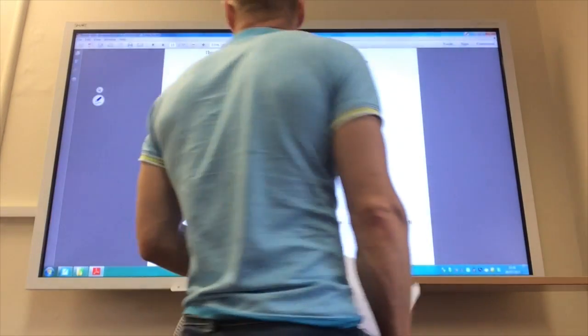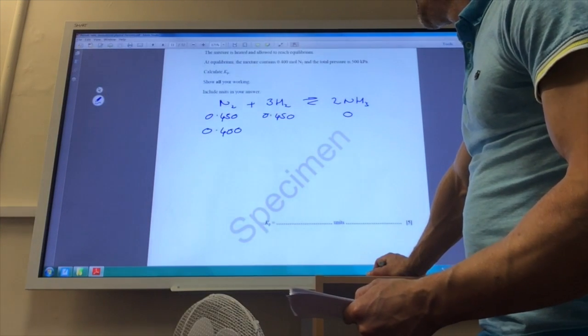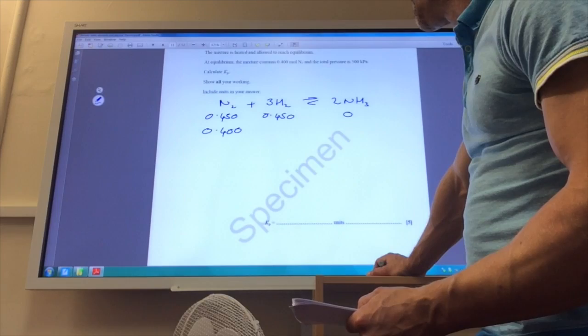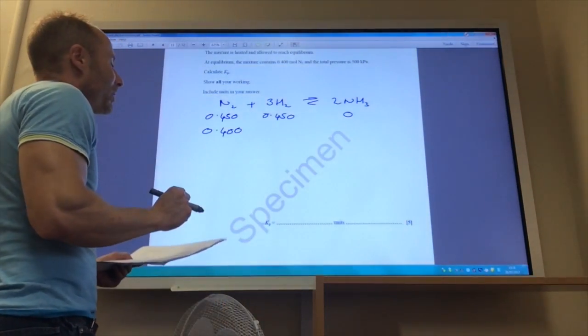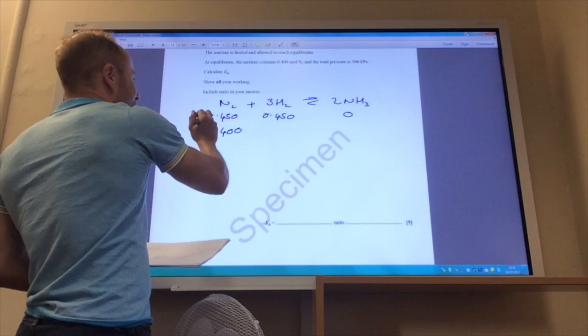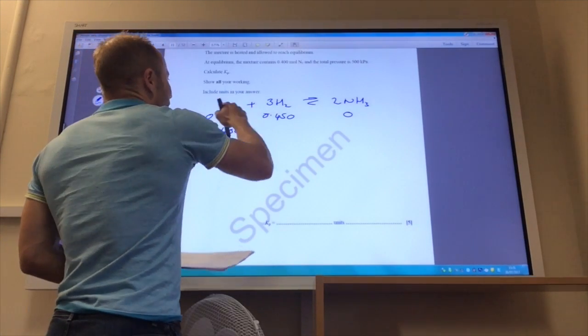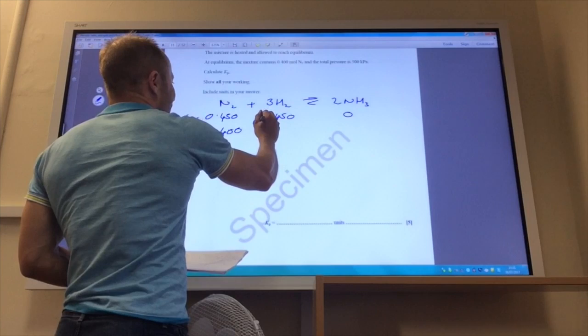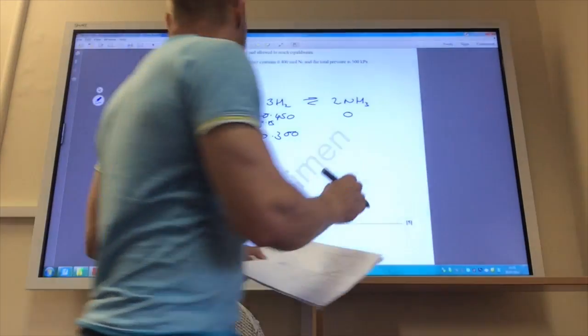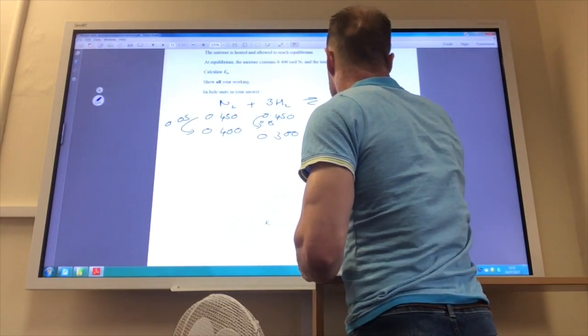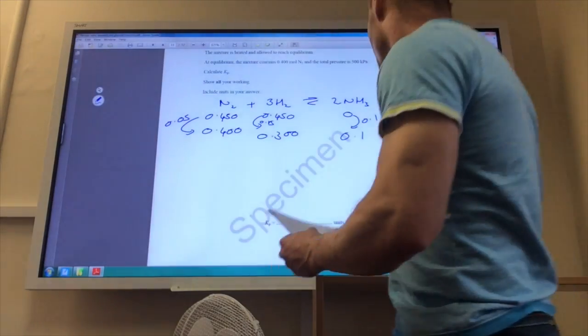Okay, so moving on to part C then, and we've got to calculate Kp now. So it's given me the moles at equilibrium and at the beginning. So it told me I started off with 0.5 moles of nitrogen, 0.45 moles of hydrogen, no ammonia at all. At equilibrium I've got 0.4 of nitrogen, so I've lost 0.1 of nitrogen. For every one of those I react three of those, so it must mean that's gone down by 0.15, so I'm left with 0.3 moles of hydrogen. For every one of nitrogen I make two of ammonia, so that's two times 0.05 which is 0.1, so I've got 0.1 moles of ammonia.